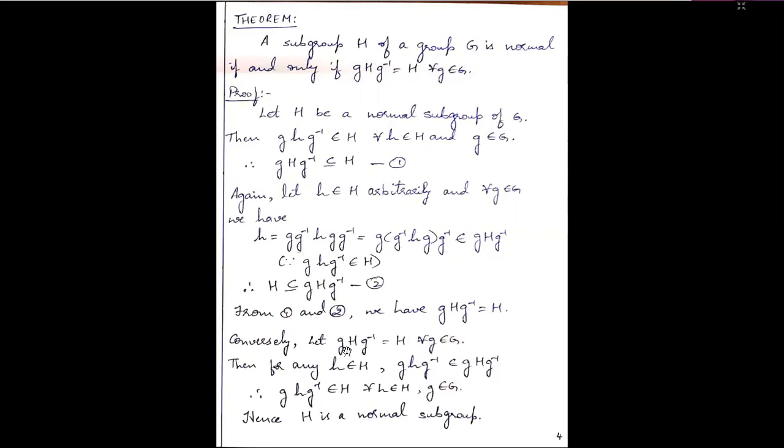So the first part is done. Conversely, assume gHg⁻¹ equals H for every g belonging to G. We need to show H is a normal subgroup. We take an element h belonging to H and we know gHg⁻¹ is an element of gHg⁻¹. Since gHg⁻¹ equals H, this gHg⁻¹ is also an element of H for every h belonging to G. Hence, since this condition holds, from Theorem 1 we can say H is a normal subgroup.